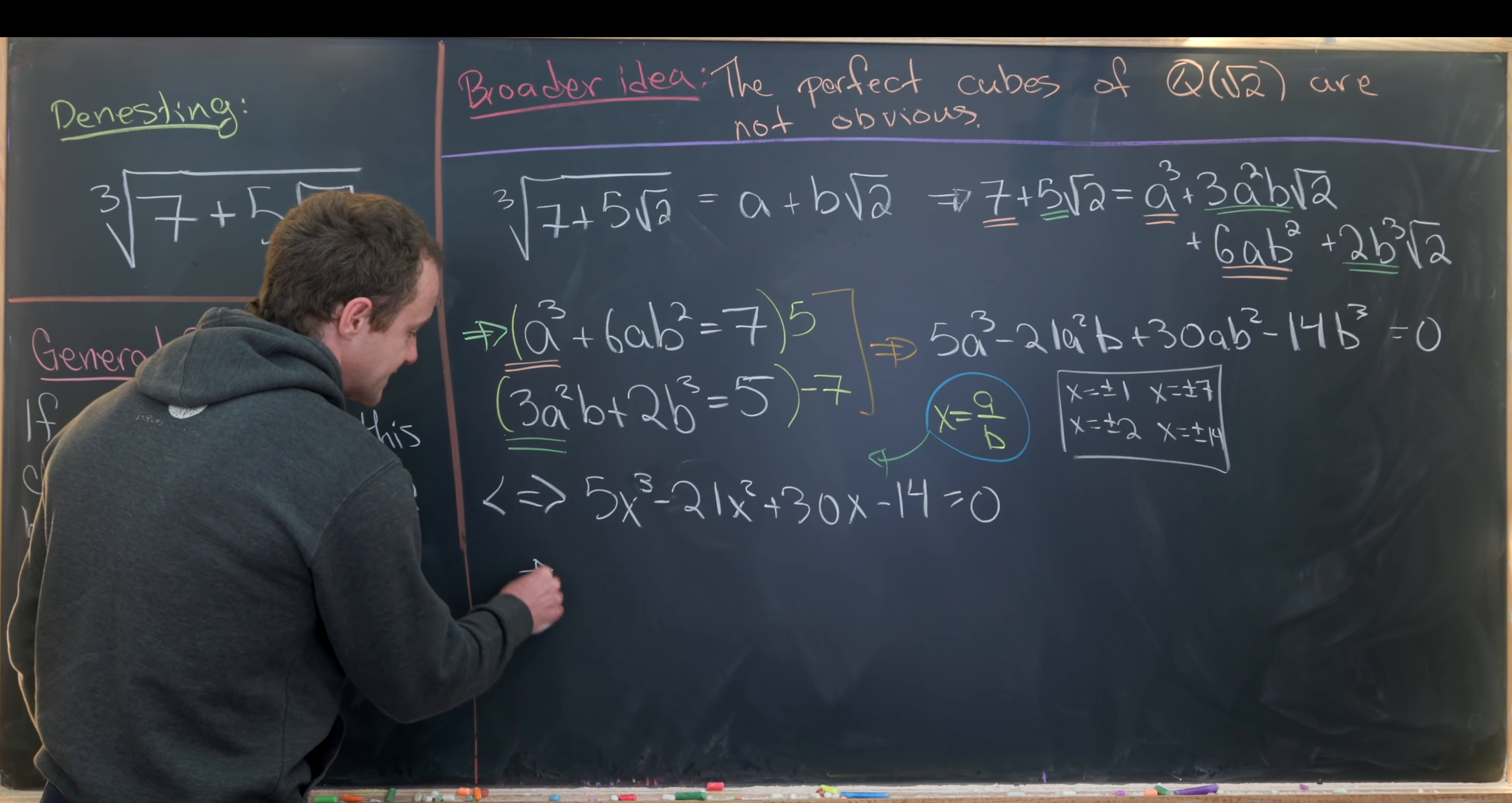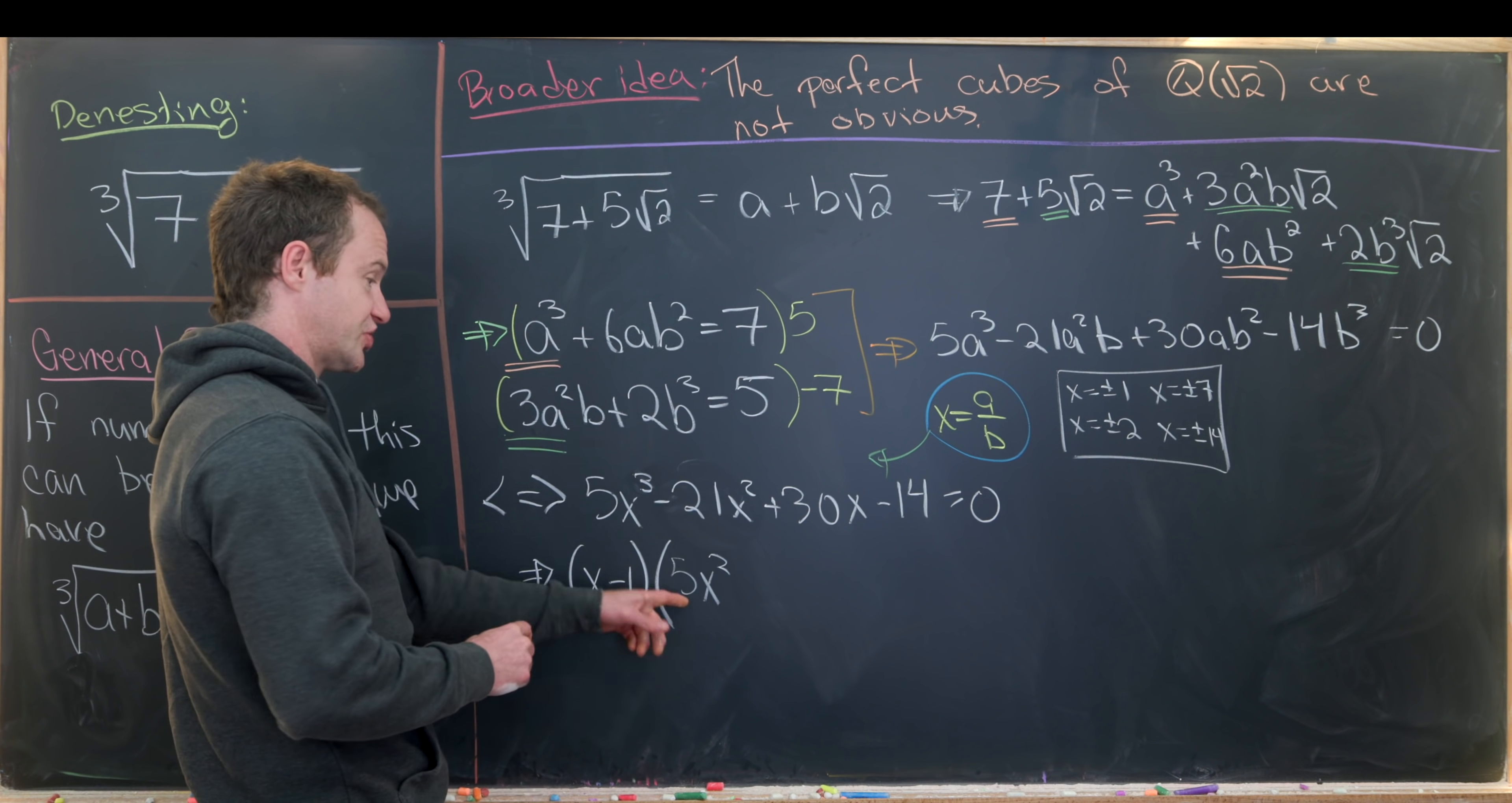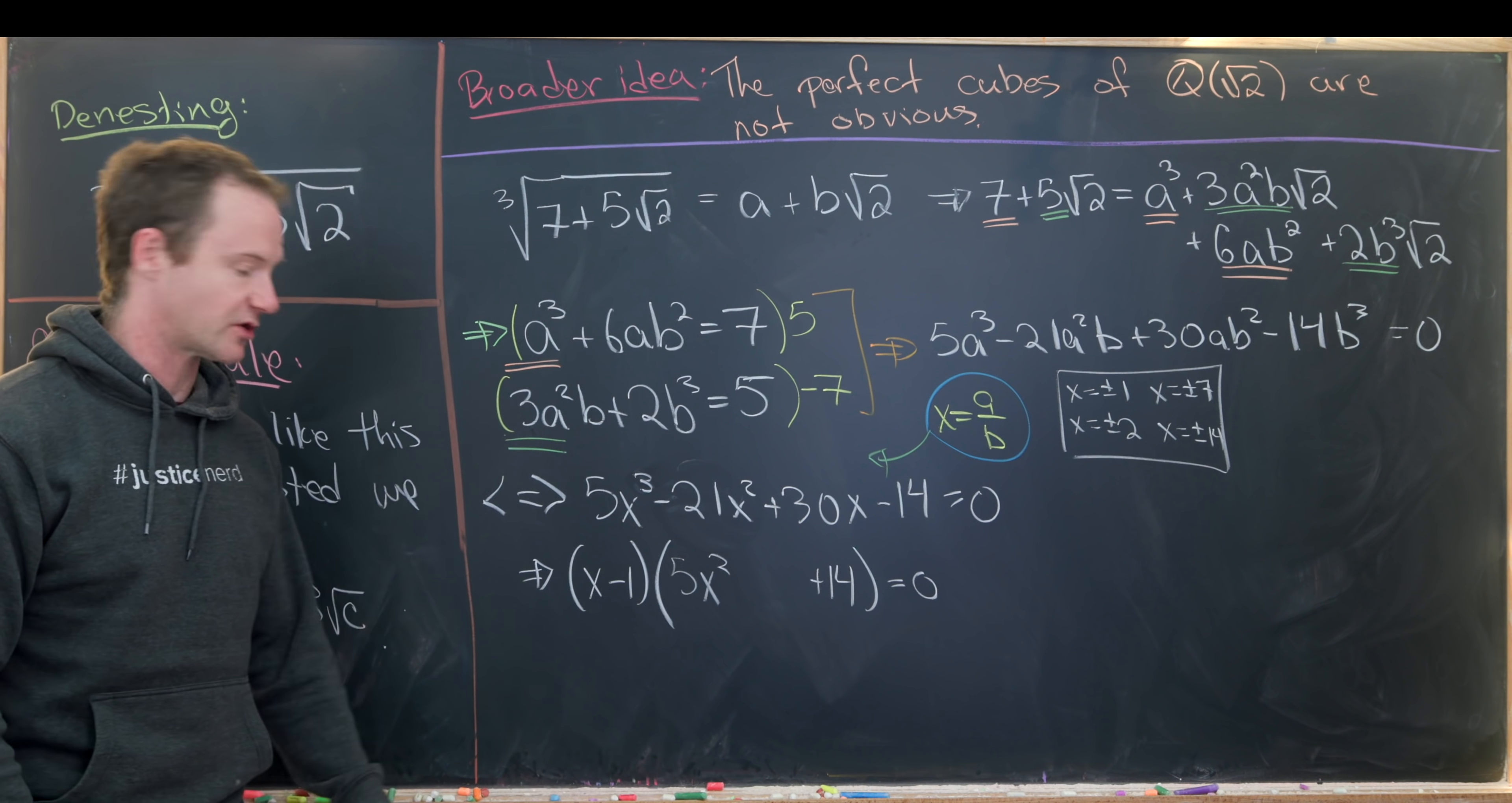But if 1 is a root then we can factor out x minus 1. Then if we factor out x minus 1 we can guess and check to get the quadratic polynomial that's left over. So we'll definitely need a 5x squared term to start off. And we'll definitely need a plus 14 to end it off. So how do we know that? Well that's because we have a 5x cubed here and a negative 14 here. Now we just have to massage this middle number so that we get these two cross terms.